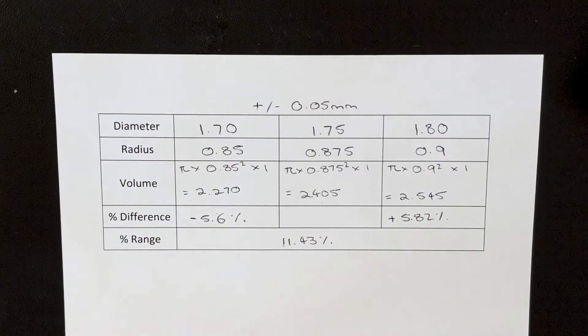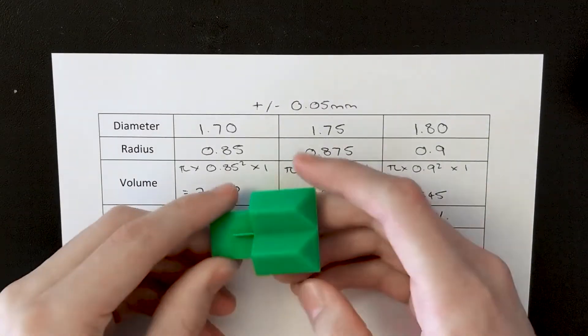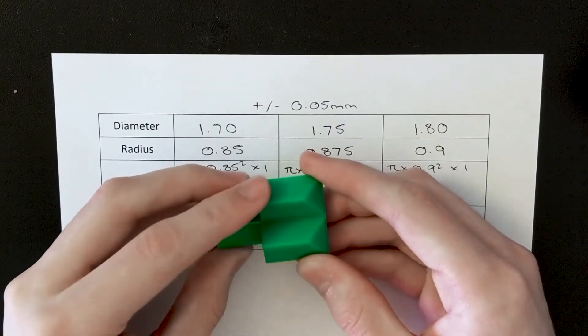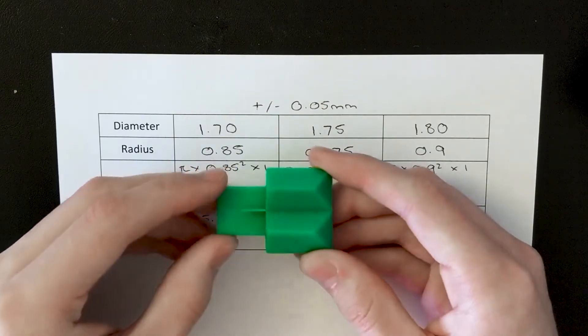Now to actually see what kind of difference this makes when we're overextruding by 11%, I'm going to print off one of these overextrusion tests that I've made. And we're going to set the extrusion multiplier to 111. So we'll be deliberately overextruding by 11%.